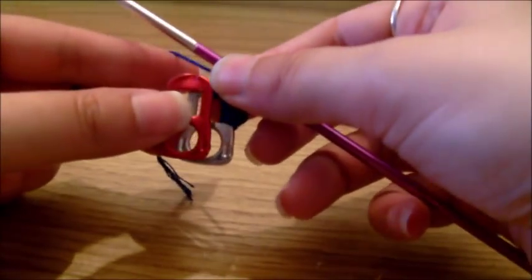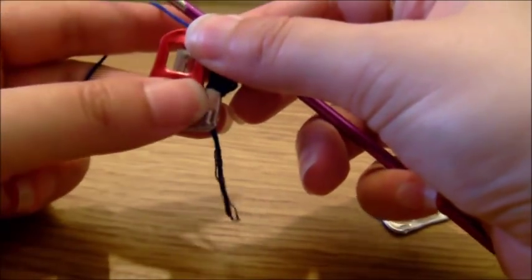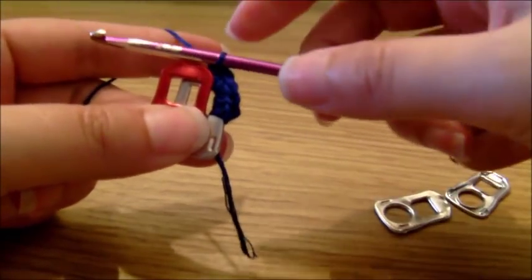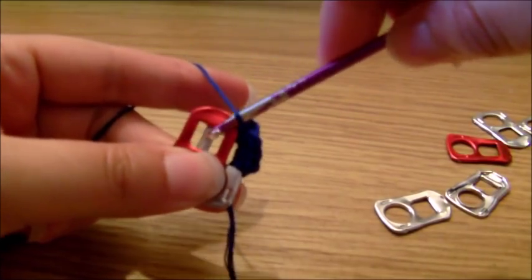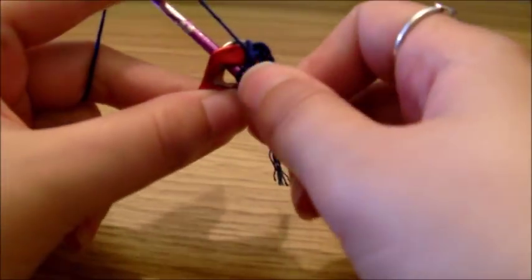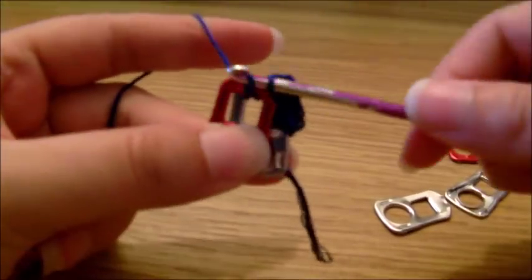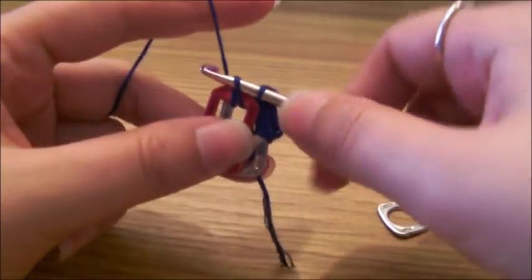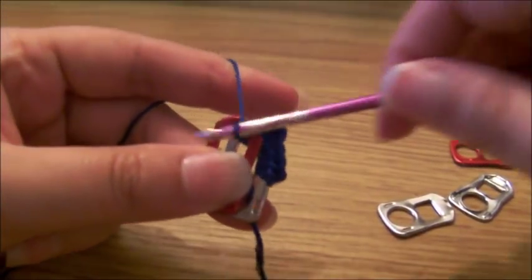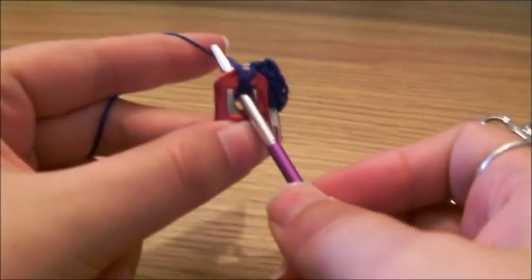Next you want to grab another pop tab, place that on top. And now we're going to go through the hole on both of the pop tabs at the same time. So you're just going to go straight through here, grab the yarn or thread, pull it through. Grab the yarn again and pull it through both of the holes. We're going to do this twice again.